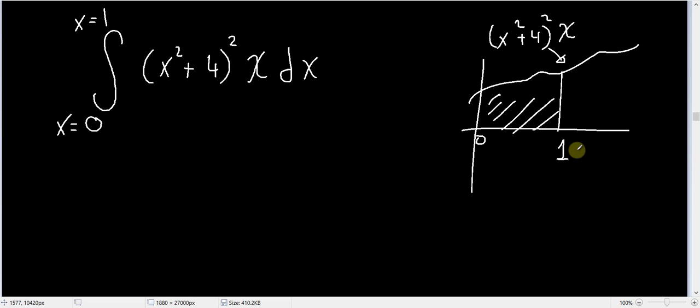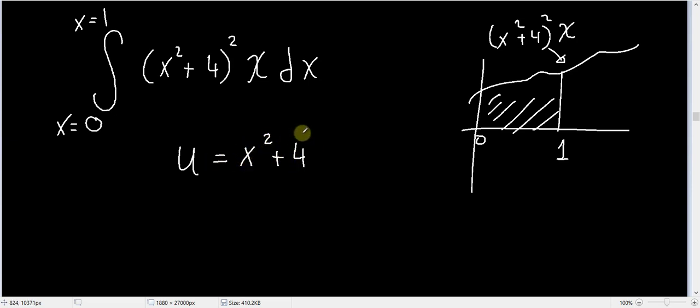You could evaluate this integral in this specific form, but it would be much easier to do a variable substitution. You can let u be equal to x² + 4, and then change the variables inside this integration to use u instead of x.